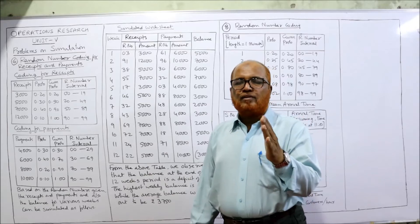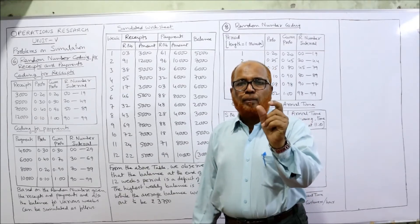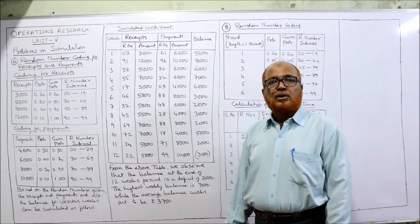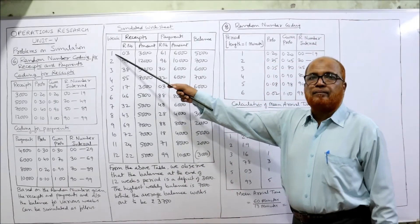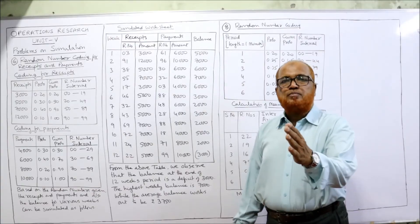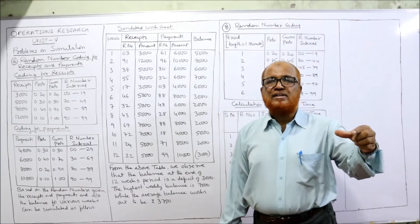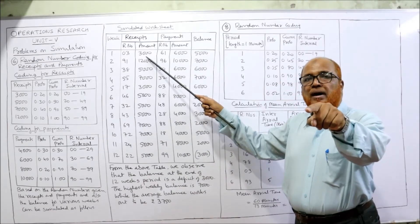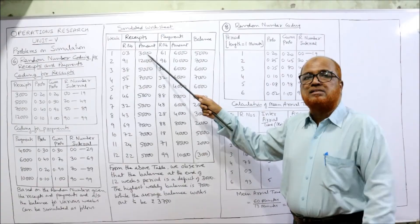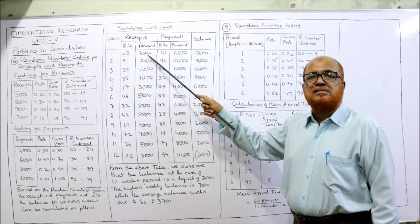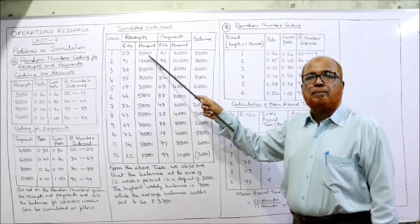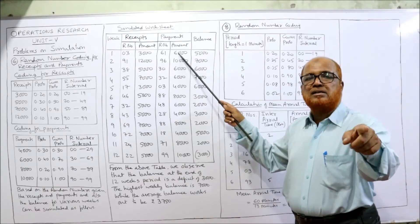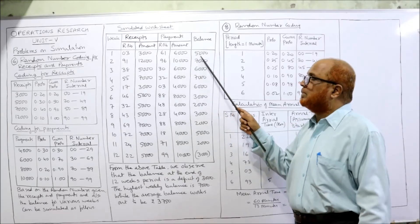In the problem, it is given that the opening cash balance at the beginning of the first week was 8,000. During week one, receipts are 3,000. So 8,000 opening balance plus 3,000 receipts equals 11,000. The payment is 6,000, so 11,000 minus 6,000 equals 5,000 — this is the closing balance of week one.